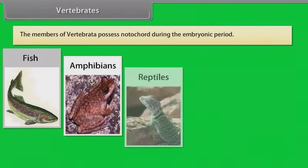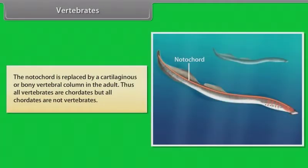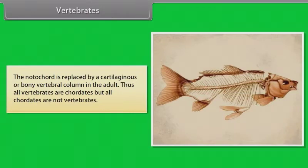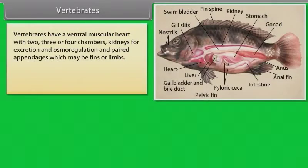Vertebrates. The members of Vertebrata possess notochord during the embryonic period. The notochord is replaced by a cartilaginous or bony vertebral column in the adult. Thus, all vertebrates are chordates, but all chordates are not vertebrates. Vertebrates have a ventral muscular heart with two, three or four chambers, kidneys for excretion and osmoregulation, and paired appendages which may be fins or limbs.